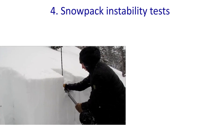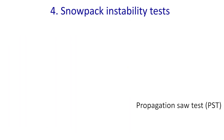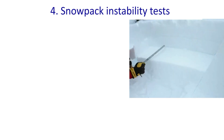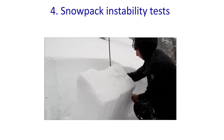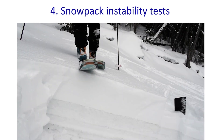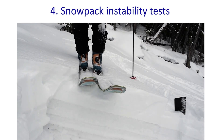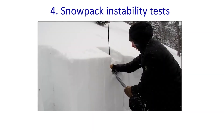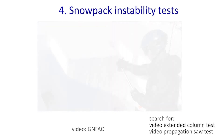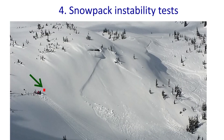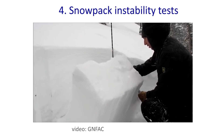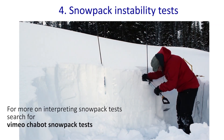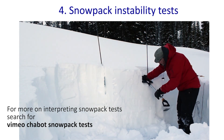Modern instability tests like the extended column test and propagation saw test leave the slab mostly intact, which is important for crack propagation driven by a bending slab. The results of these tests represent both crack initiation and crack propagation. Testing for propagation is important because riders often initiate cracks in shallow weak layers. However, crack propagation is missing from older small column tests like the compression test. Keep in mind that snowpack instability tests are small in relation to the size of an avalanche start zone, so they cannot fully capture all the processes involved in slab avalanche release. For backcountry recreation, these tests can help assess if a slope is unstable, but we do not recommend that recreationists use them to tell if a slope is stable. There is simply too much spatial variability, and you may have dug in an area with a relatively stable snowpack.